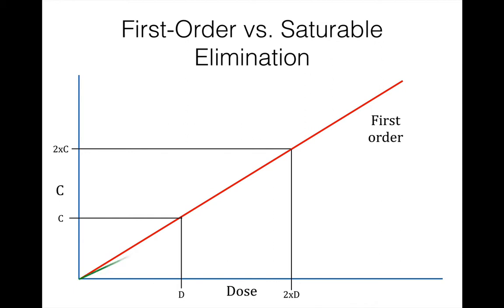When a drug follows saturable metabolism or Michaelis-Menten elimination, the concentration initially follows first-order elimination patterns, but as the concentration goes up it begins to saturate. Once we approach Vmax, concentrations go up very rapidly with fairly small changes in dosage.